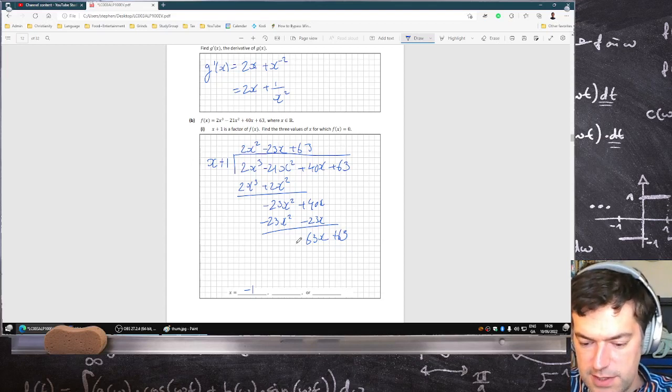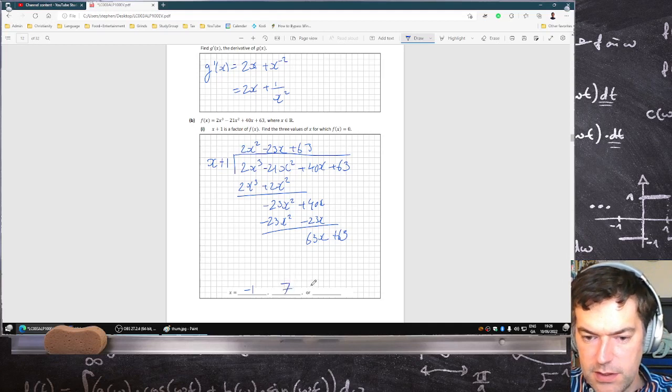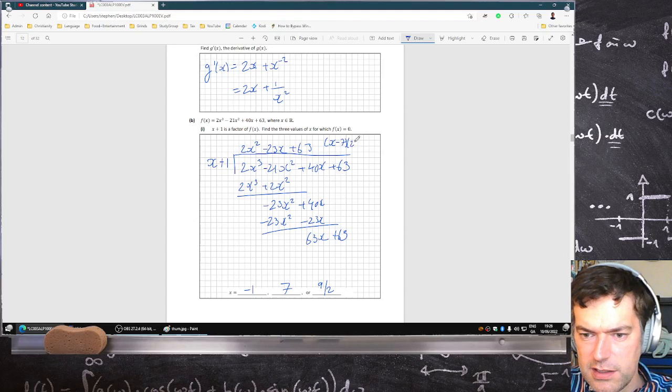And then we just have to solve that quadratic. And we get seven and nine over two. If we factorize that, the factors are x minus seven and two x minus nine, by the way.